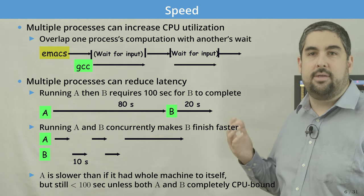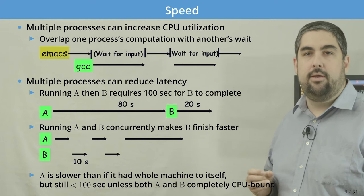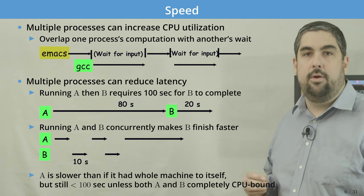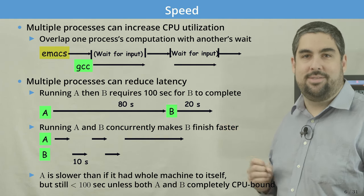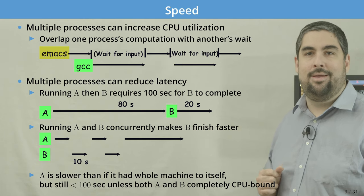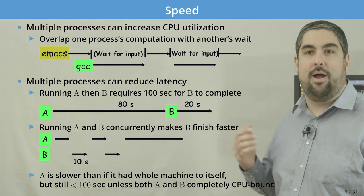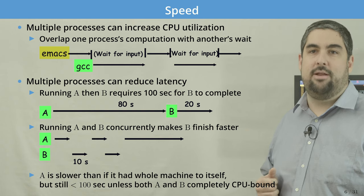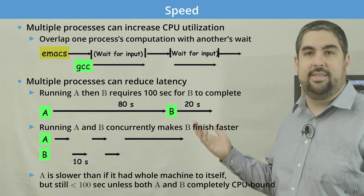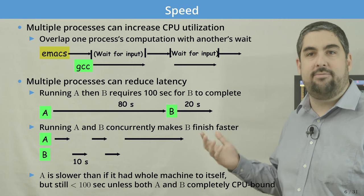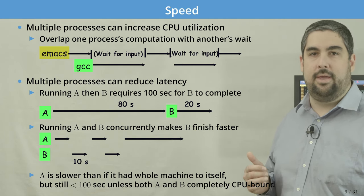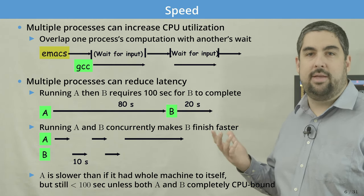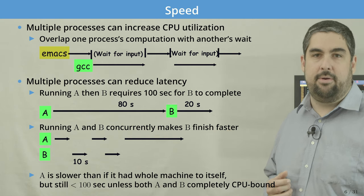Multiple processes can also reduce latency. On old computers we'd only run one process at a time — batch processing systems where process B had to wait for process A to complete. If A took 80 seconds and B took 20 seconds, you'd have to wait 100 seconds for B's results. If we can run these concurrently, from the user's perspective we complete B in a shorter period of time.